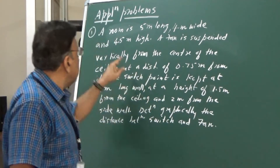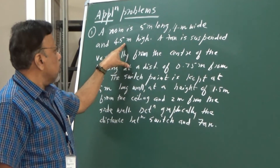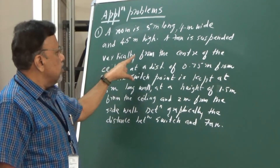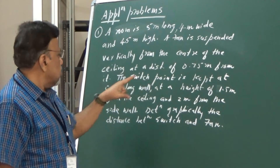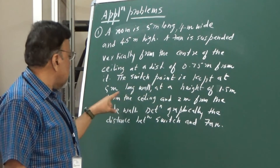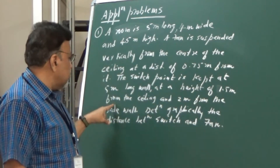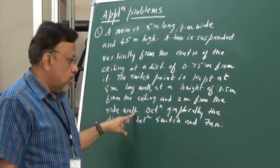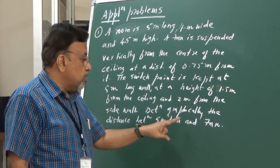Let us see this problem. A room is 5 meters long, 4 meters wide and 4.5 meters high. A fan is suspended vertically from the center of the ceiling at a distance of 0.75 meters from it. The switch point is kept at the 5 meters long wall at a height of 1.5 meters from the floor and 2 meters from the center. Determine graphically the distance between the switch and the fan.